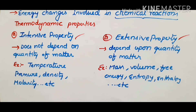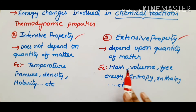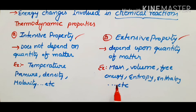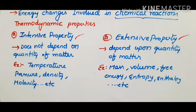Extensive property depends on the quantity of matter — we measure the entire property of the system. Examples of extensive properties are: mass, volume, free energy, entropy, and enthalpy. We will explain entropy, enthalpy, and energy forms later. This is the simple overview of intensive and extensive properties.